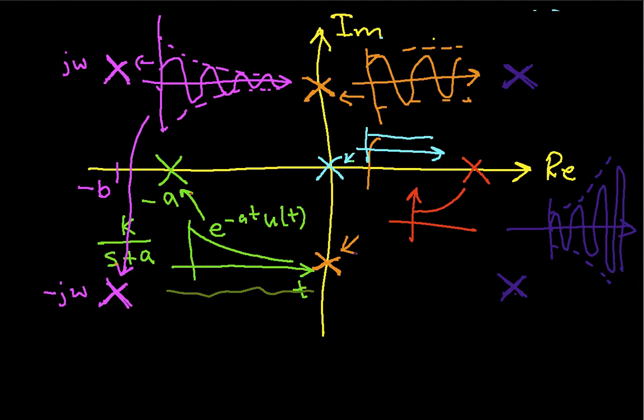The imaginary part of a pole tells me whether there's any oscillation in the time signal. So, poles with an imaginary part of zero, that is, poles on the real axis, like this guy, this guy, and this guy, they don't wiggle. They're just either increasing, decreasing exponentials, or the unit step function.